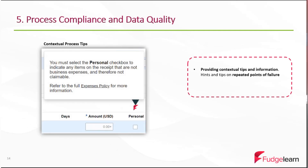Another important area is process compliance and data quality. You can use OGL to support users by providing contextual tips and information during the completion of system processes. These hints and tips can be tailored according to business feedback on repeated points of failure. Users can also be directed to relevant policies, procedures or training materials, including embedded links to take them directly to that information.